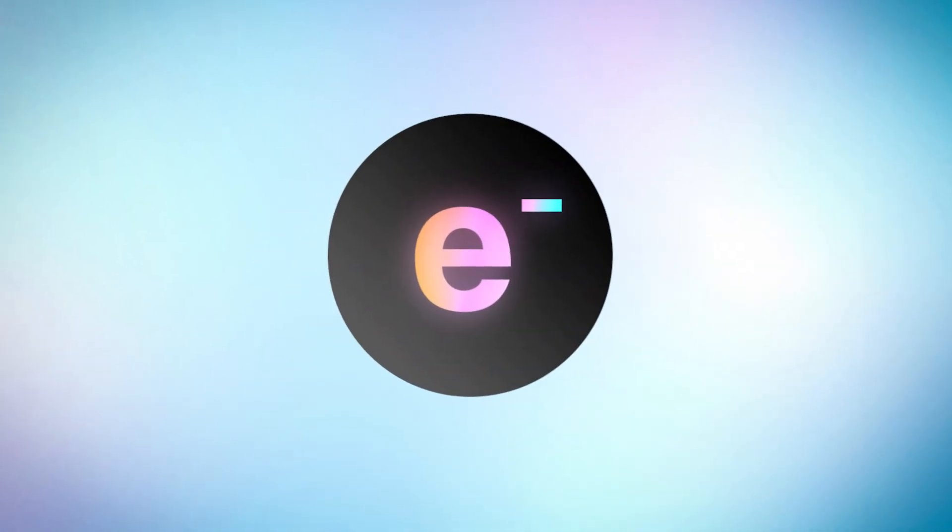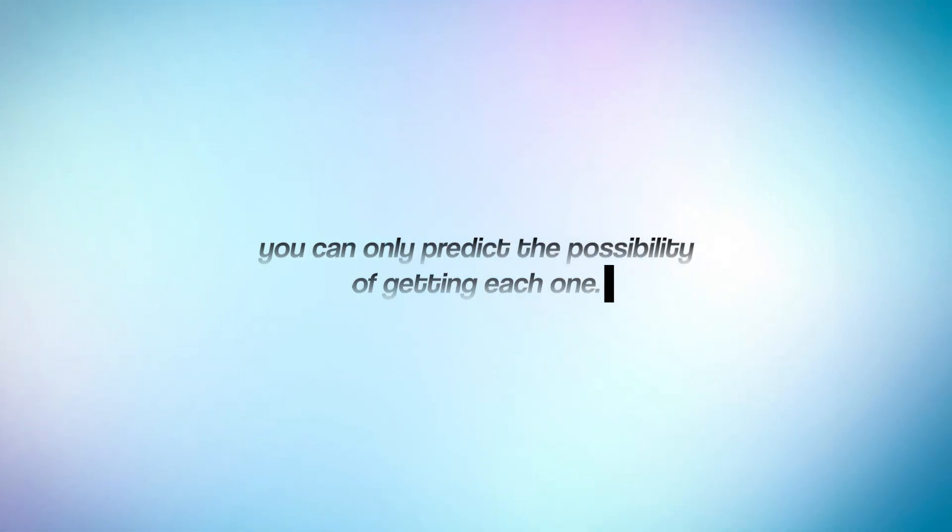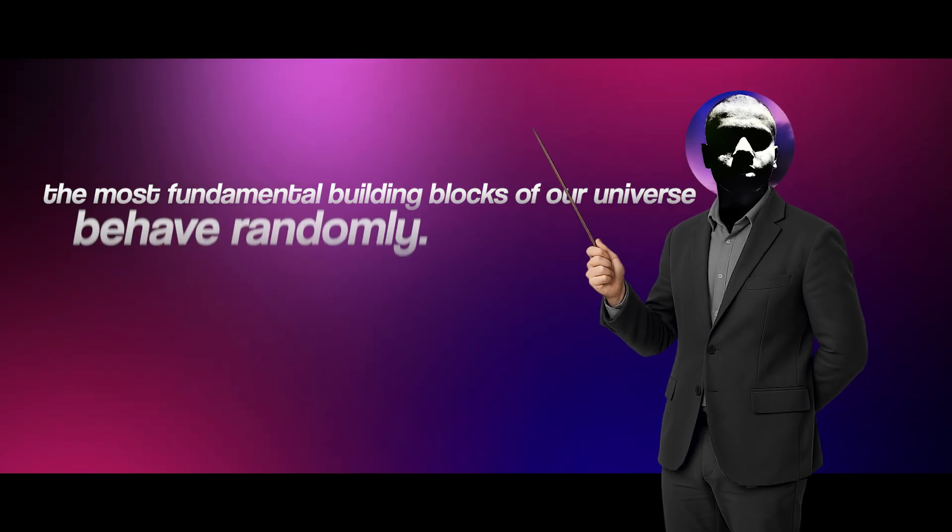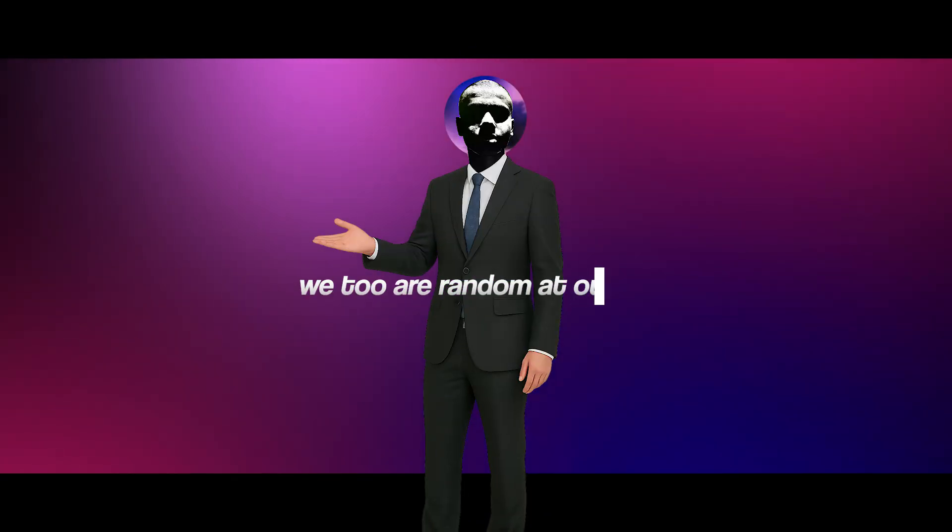And here's the kicker. When we observe them, all these possibilities collapse into a single outcome. But you cannot predict what outcome you'll get. You can only predict the possibility of getting each one. In other words, the most fundamental building blocks of our universe behave randomly. And if we are made entirely out of these quantum particles, then that means we too are random at our core.